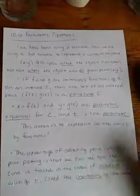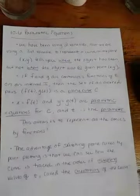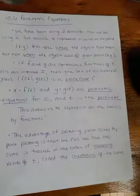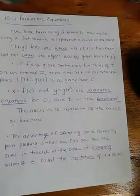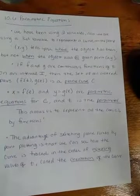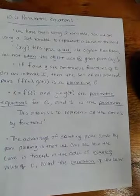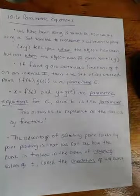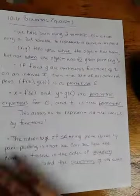If f and g are continuous functions of t on an interval i, then the set of all ordered pairs, f of t, comma g of t, is a plane curve c. X equals this function f of t, and y equals the function g of t. These are the parametric equations for c, the plane curve. And t is the parameter. And so this allows us to represent all the conics by functions. The advantage of sketching plane curves by point plotting is that we can see how the curve is traced in the order of increasing values of t, which is called the orientation of the curve. So we're going to do that right now.